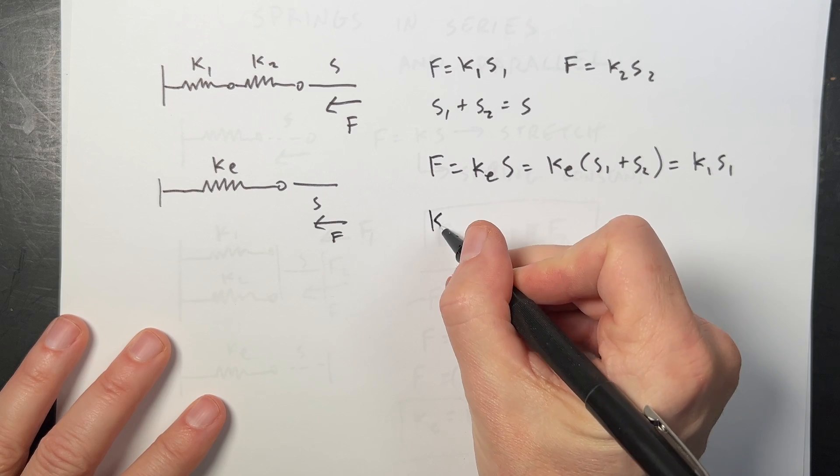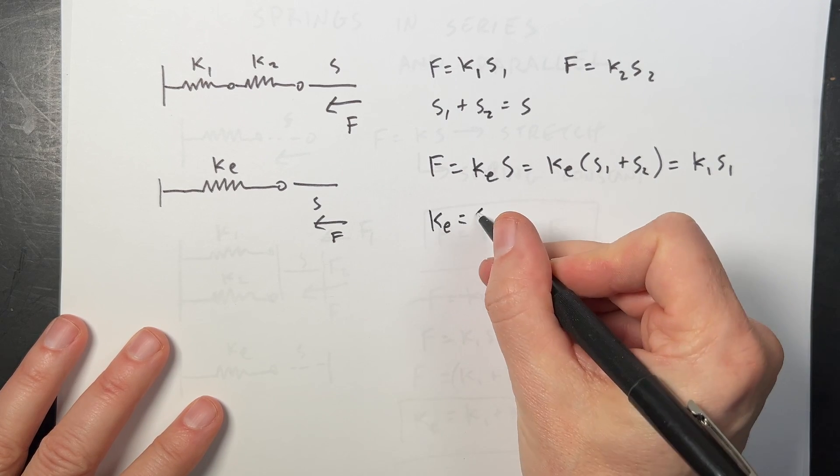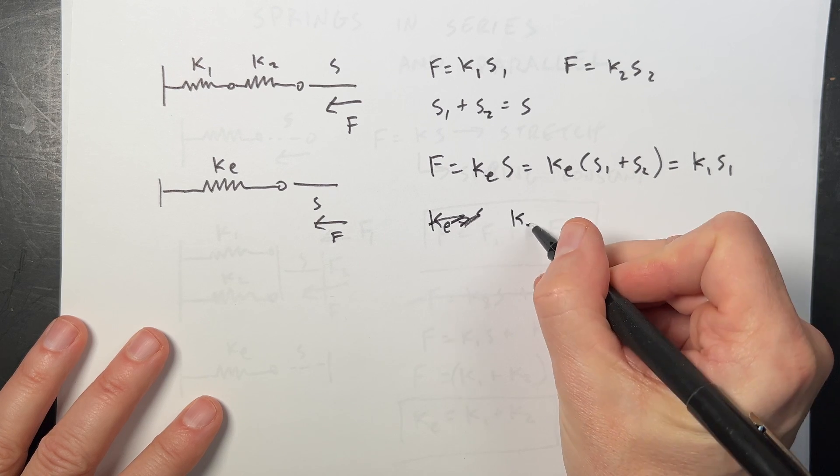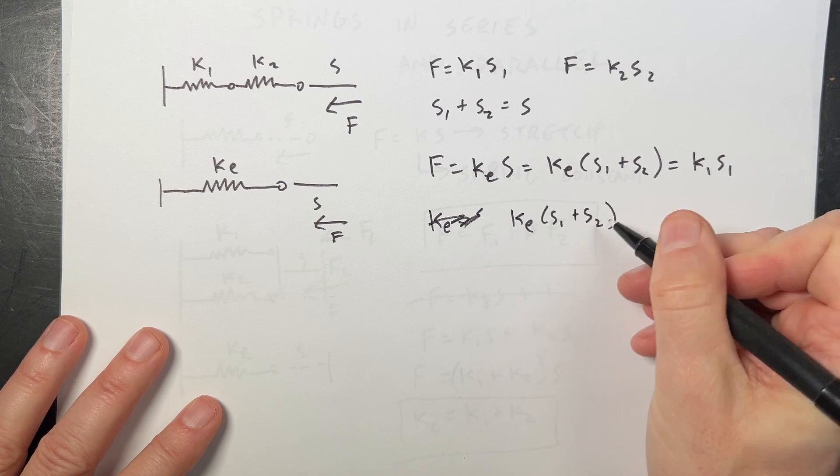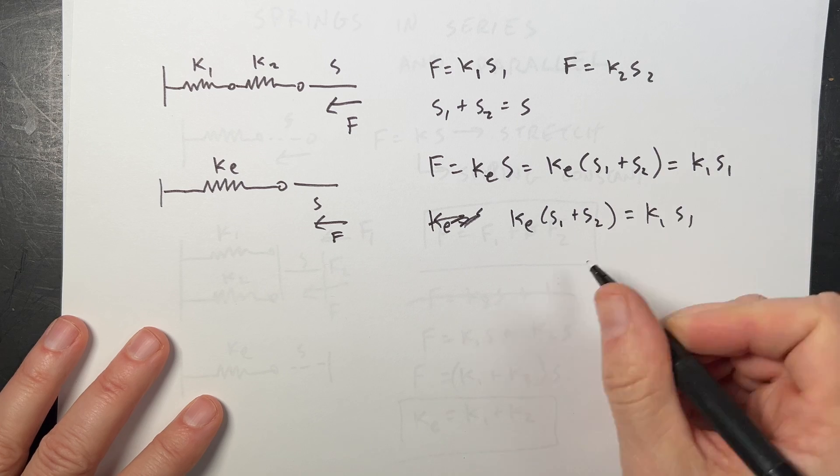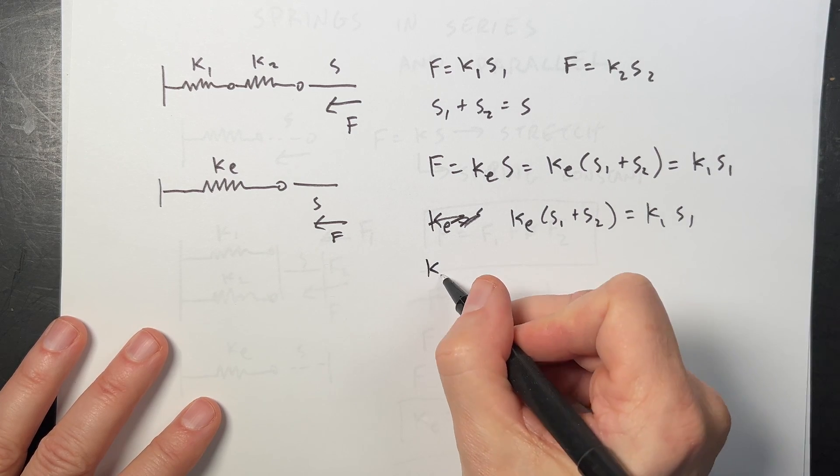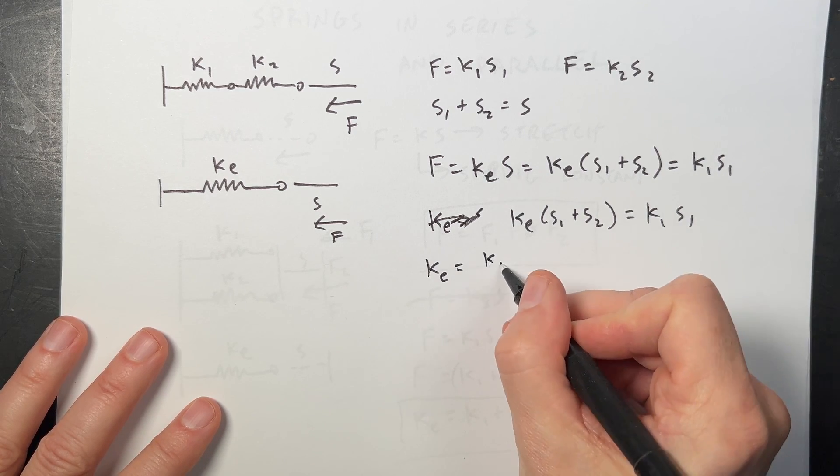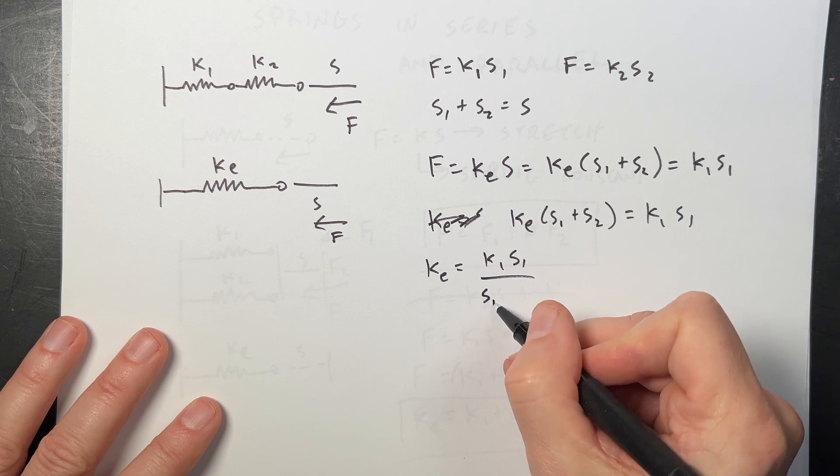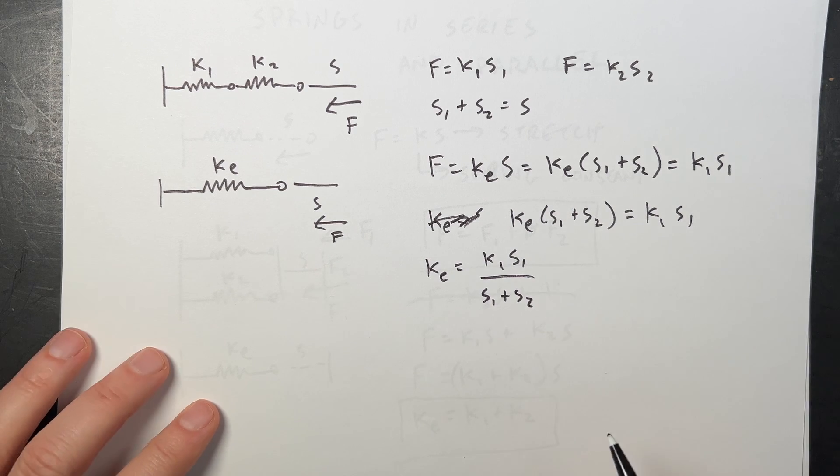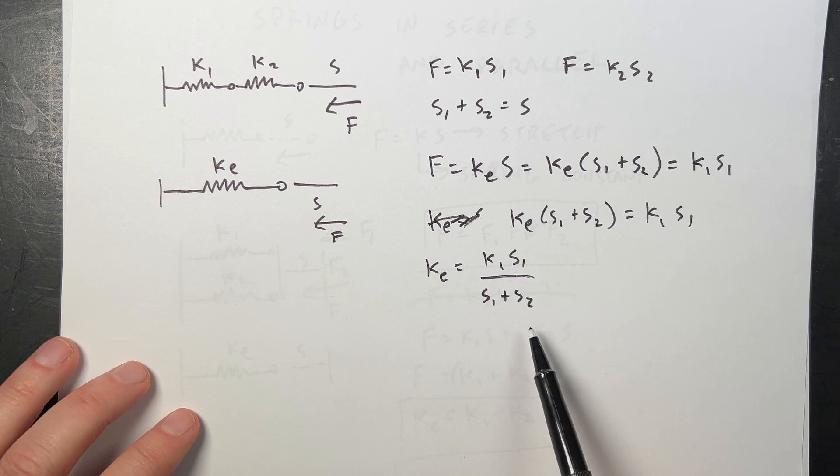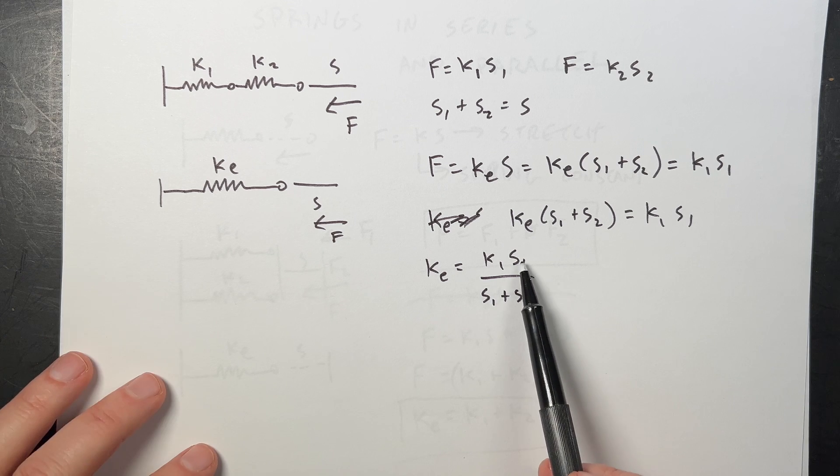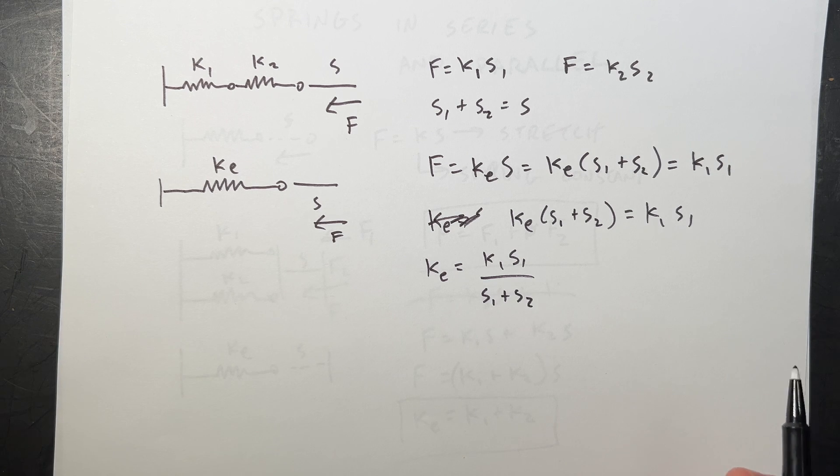And I can go ahead and write this as K equivalent times S1 plus S2. And that's going to be equal to K1S1, right? Because that's the force F. It still has to be equal to that. K equivalent S1 plus S2 is equal to K1S1. And let's solve for K equivalent. K equivalent is going to be K1S1 over S1 plus S2. Now I want to get rid of, I want to get S1 and S2 in terms of something else. And really I want to get it all in terms of K1 and K2.